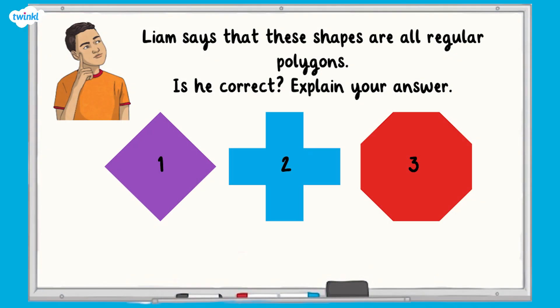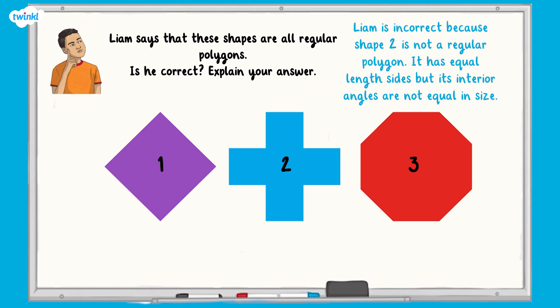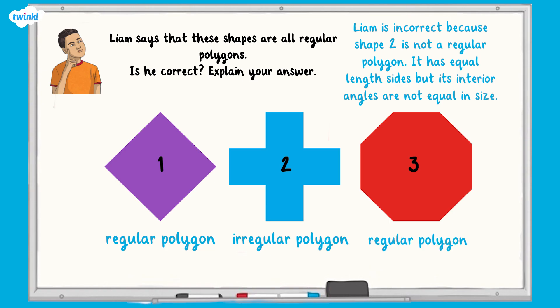Now let's try a challenge question. Liam says that all these shapes are regular polygons. Is he correct? Remember to explain your answer. Pause now while you answer the question. Liam is incorrect because they are not all regular polygons. Shape 1 is a regular polygon because it has four straight sides that are equal in length and its four interior angles are right angles, so it's a square. Shape 2 is an irregular polygon — it has 12 straight sides that are equal in length, but its interior angles are not all the same size. Shape 3 is a regular polygon — it has eight straight sides that are all equal in length and eight interior angles that are equal in size.